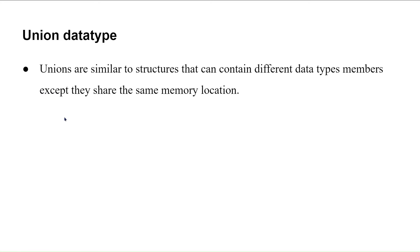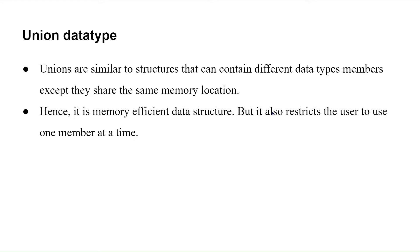Union is similar to structure in that it can contain different data type members, but the difference is in how memory is allocated and how elements are accessed. In a union, all members share the same memory location. So if you have five elements, they all share the same memory, meaning you can access only one member at a time. This makes it a memory-efficient data structure, but it restricts the user to accessing only one member at a time since sharing memory means you cannot access multiple elements simultaneously.